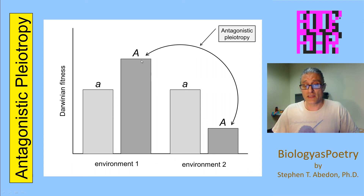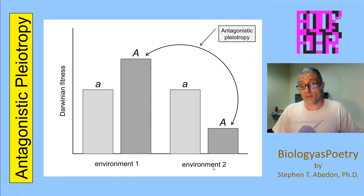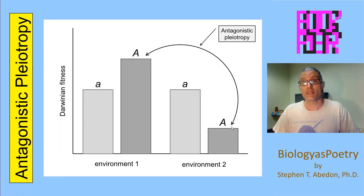So what you see here is an allele that is displaying antagonistic pleiotropy. The wild-type allele is this little 'a' allele, and the allele we're focusing on is this mutation that has given rise to an increase in fitness in environment number one, but there is a corresponding decrease in fitness in environment number two. That is antagonistic pleiotropy — more than one phenotype associated with one genotype, where one phenotype results in a higher level of fitness and the other results in a lower level of fitness.